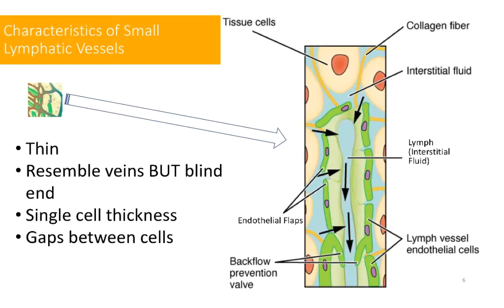Those gaps are quite useful because everything moves from where it's more concentrated or under more pressure to where it's less. Excess tissue fluid is therefore easily able to enter through these gaps and into the lumen of the lymphatic capillaries.